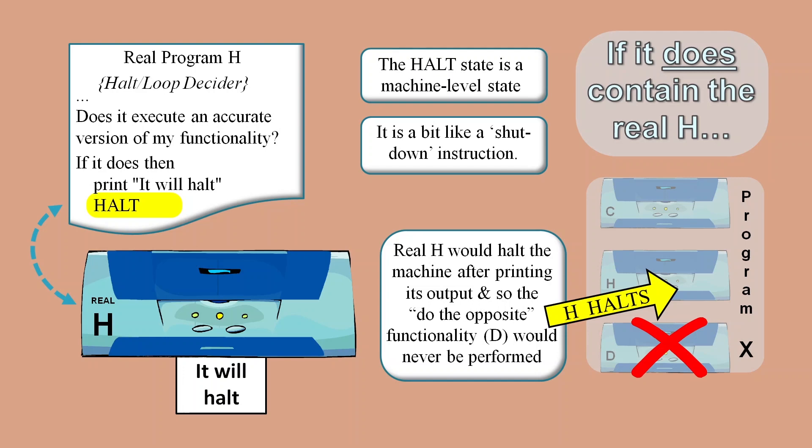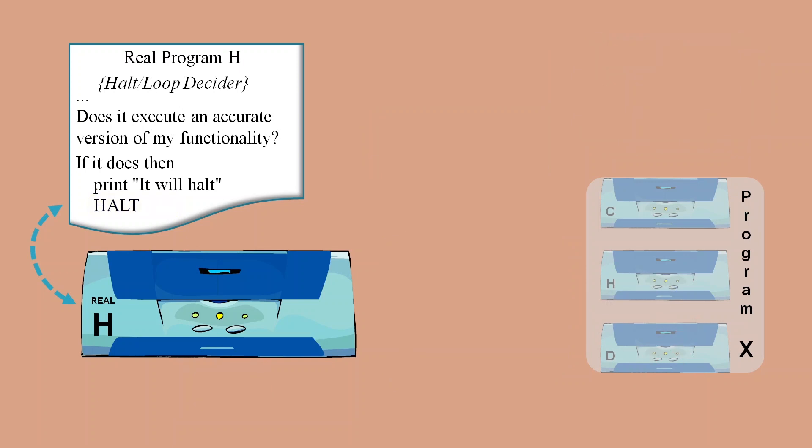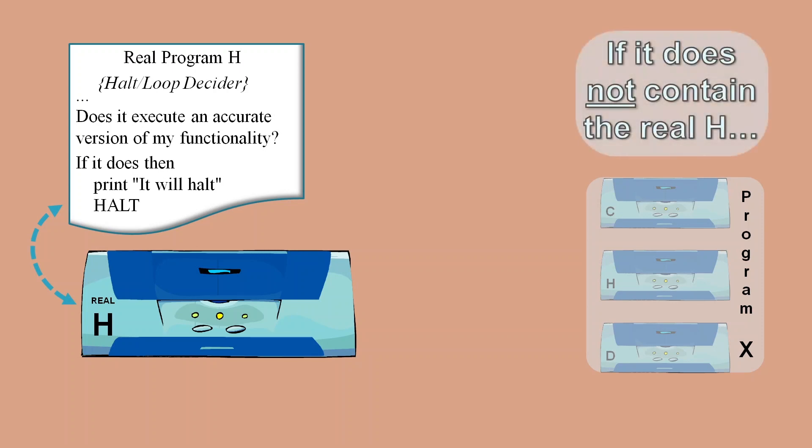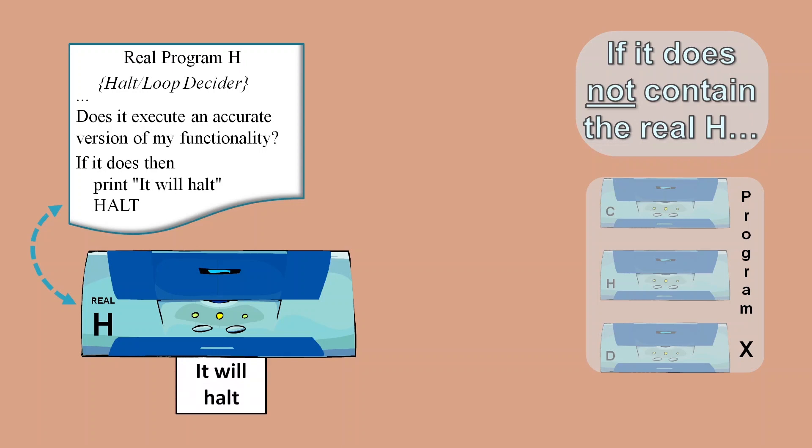The only other possibility that remains is that Program X contains some attempt to produce the same functionality as H but without the machine level halting. Remember the problem for Program X is that the real H can say it will halt and then force processing to stop with a machine level halt.